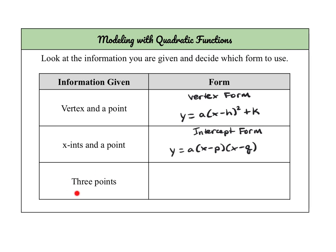The third scenario would be that you just have three pieces of data or three points on your graph. This is going to be the trickiest one to do, but we would model this with standard form, which is y equals ax squared plus bx plus c. However, since we are missing a, b, and c, we actually have to solve a system of three variables. It's a little bit more tedious, but it's definitely doable.